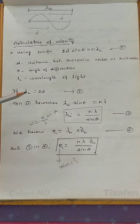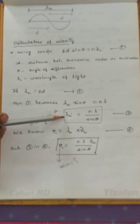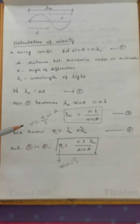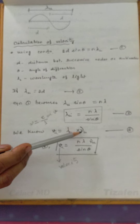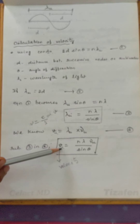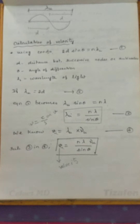Substituting λ_u in place of 2d, we get: λ_u × sinθ = nλ_l. Rearranging, λ_u = nλ_l / sinθ. Since we know the wavelength of light λ_l, the order n, and the angle θ, we can find λ_u. Then, using the relation velocity = frequency × wavelength, the velocity of ultrasound is: V = ν × λ_u = (nλ_l / sinθ) × ν. This gives the expression for the velocity of ultrasound. So we now have expressions for both the wavelength and velocity of ultrasound, calculated with the help of acoustic grating.